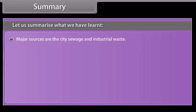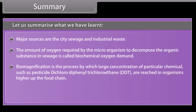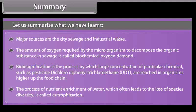Major sources of water pollution are city sewage and industrial waste. The amount of oxygen required by microorganisms to decompose organic substances in sewage is called Biochemical Oxygen Demand (BOD). Biomagnification is the process by which large concentrations of chemicals such as the pesticide DDT (dichlorodiphenyltrichloroethane) are raised in organisms higher up the food chain. The process of nutrient enrichment of water which often leads to the loss of species diversity is called eutrophication.